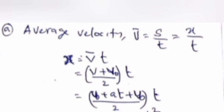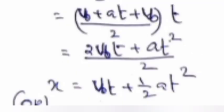Equals v₀t plus at² by 2. x equals v₀t plus half at².